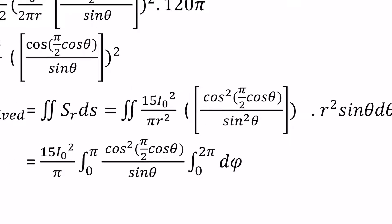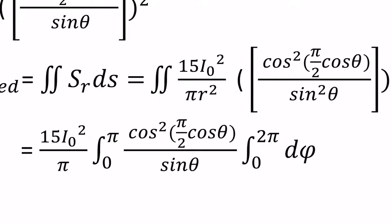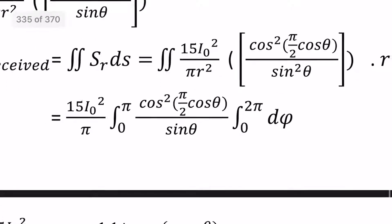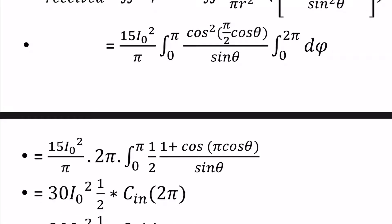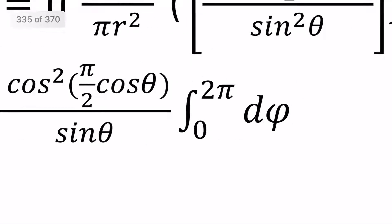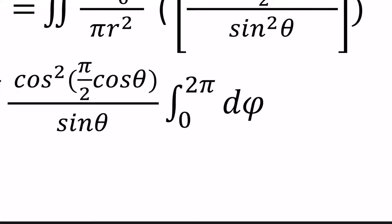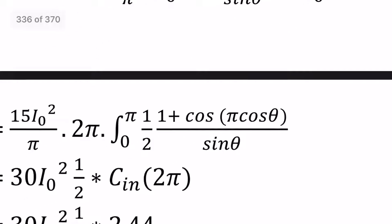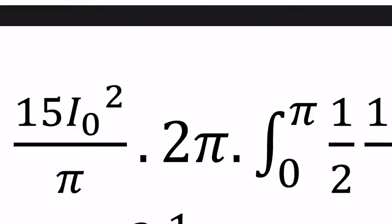We integrate with respect to theta and phi. For a sphere, the limits are: theta from 0 to pi, and phi from 0 to 2 pi. The phi integration result is 2 pi, since the integral of d-phi from 0 to 2 pi equals 2 pi.